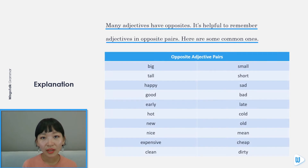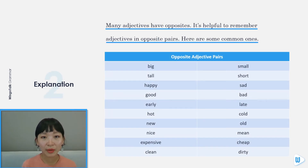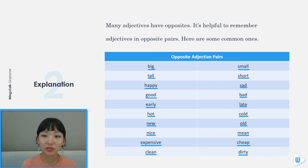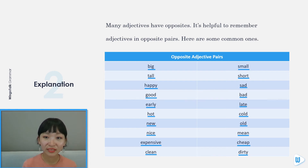Many adjectives have opposites. It's helpful to remember adjectives in opposite pairs. Here are some common ones: big or small, tall or short, happy or sad, good or bad.